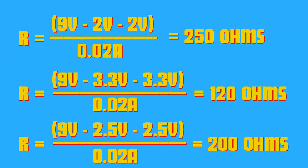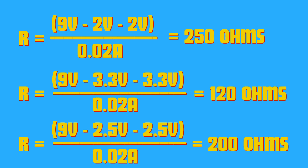To calculate the resistance of each pathway, we use Ohm's law again. 250 ohms is needed for the pathway for the red LED, 120 ohms is needed for the pathway for the blue LED, and 200 ohms is needed for the pathway for the green LED.